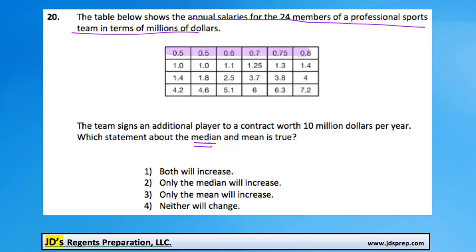So we go 1 through 12 from the start, and then working backwards, also 1 through 12 from the end. Because we don't have a single middle number, we have to find the average between the 12th and 13th values, which are both 1.4. The average between those is also 1.4 since they're both the same. So right now the median is 1.4.